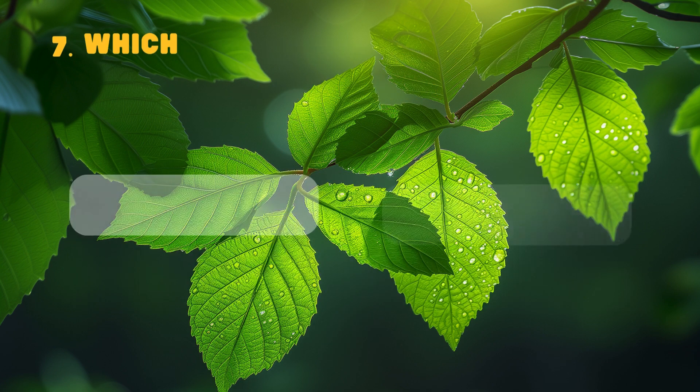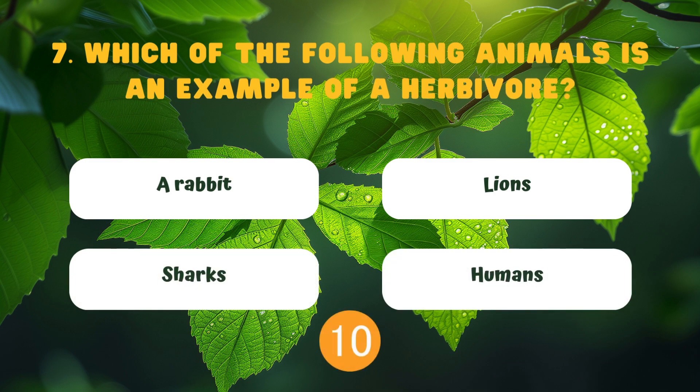Which of the following animals is an example of an herbivore? A rabbit, lions, sharks, humans.